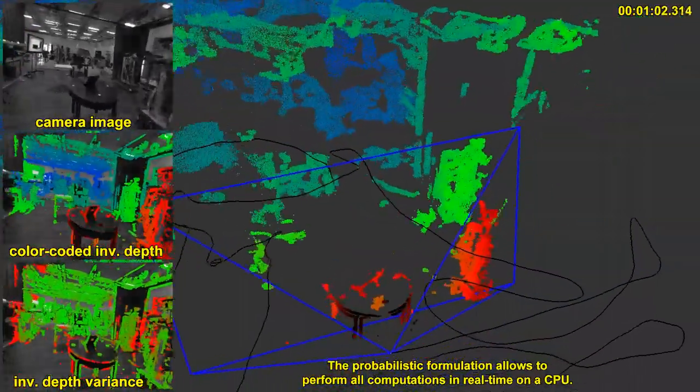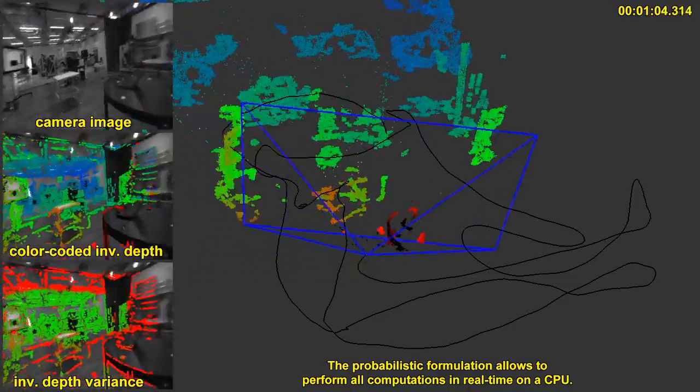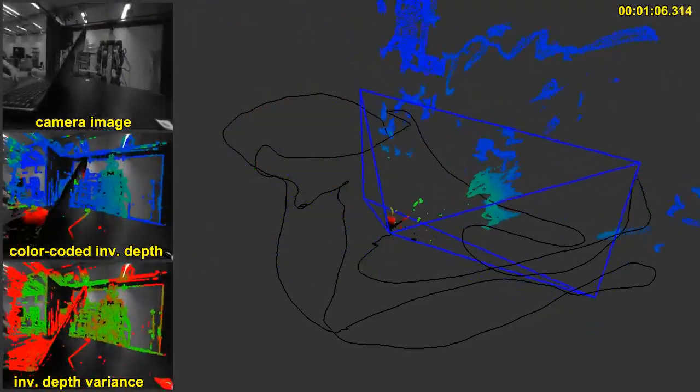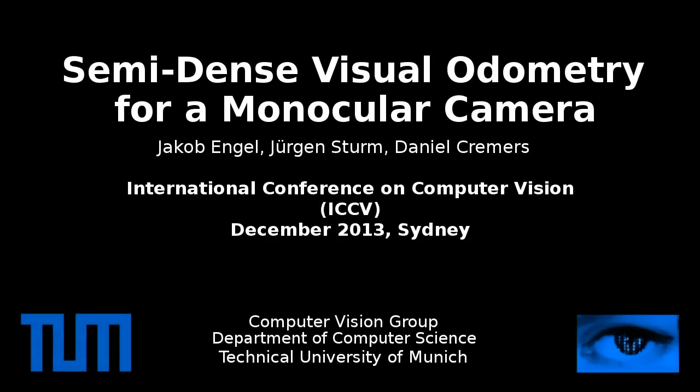The probabilistic formulation allows to perform all computations in real time on a CPU. The method is very robust and accurate, even in challenging environments and with fast camera motion, as demonstrated in this video.